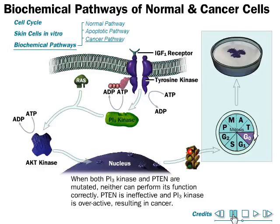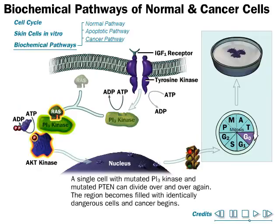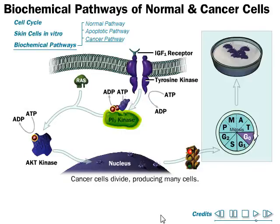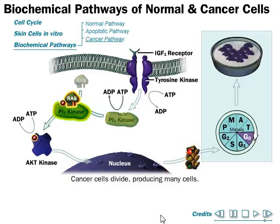However, when both PI3 kinase is overactive and PTEN (p10) is mutated and inactivated, neither can perform its function correctly. The overactive PI3 kinase binds with Ras, this PI3 kinase–Ras complex phosphorylates AKT kinase, and AKT kinase turns on the cell division cycle continuously — producing a green signal — leading to uncontrolled cell division and many cells being produced from one cell. This uncontrolled proliferation is the hallmark of malignant cancerous cell division, no longer obeying the rules of normal cell regulation and apoptosis.